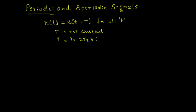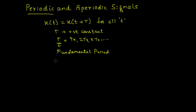For example, if this condition is satisfied for t equals t-naught, then it should also be satisfied for 2t-naught, 3t-naught, and so on. The smallest value of T which satisfies this condition is known as the fundamental period of x of t. This fundamental period T defines the duration of one complete cycle of x of t.